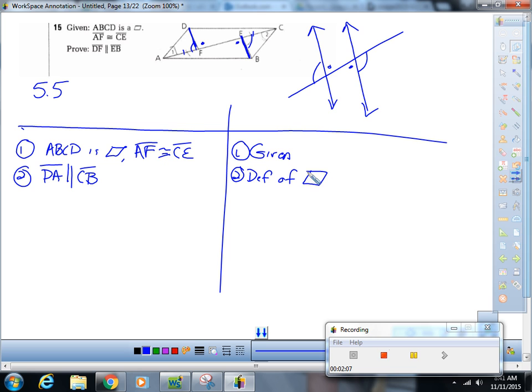I can say that angle one is congruent to angle two by if parallel. If parallel, then alternate interior angles are congruent. Okay?